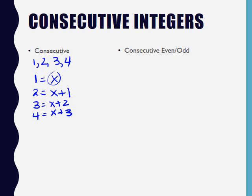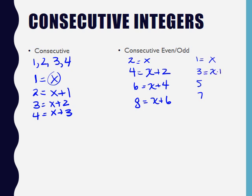For even or odd, for even let's start with 2, 4, 6, 8, and let's say that X equals 2. My next consecutive even number is going to be X, my original X plus 2, and then X plus 4, and X plus 6. Now the funny thing is if you look at the odds, let's just go with 1, 3, 5, 7. If I let 1 be X, my next consecutive odd which is 3 would again be X plus 2, then 5 would be my original X plus 4, 7 would be my original X plus 6. So even and odd, we set up the problems the same. What's going to make it even or odd is actually the setup of the problem.